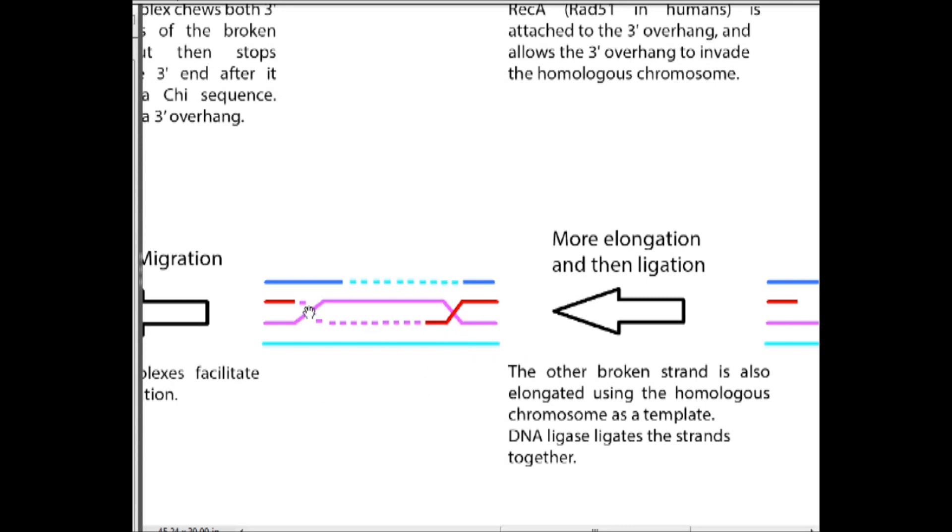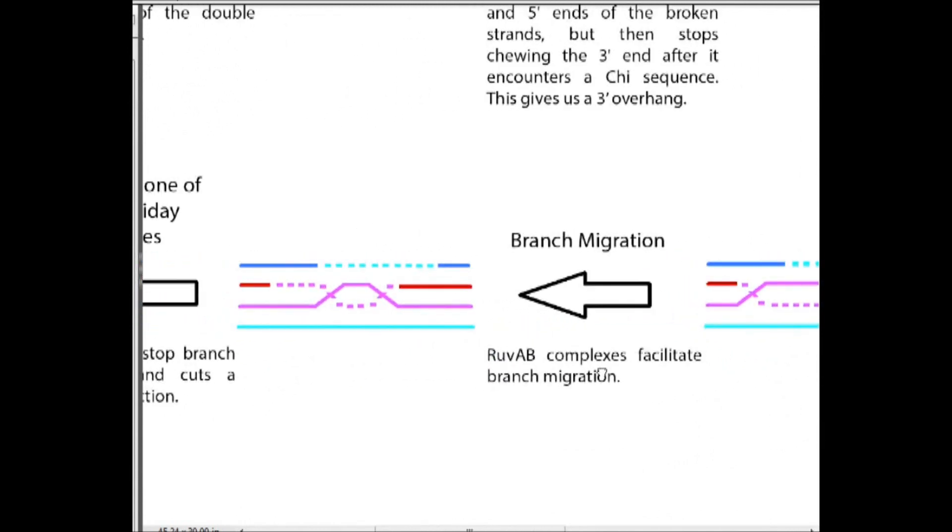After this we can migrate these two junctions that are formed. Branch migration is facilitated by the RUVAB complex, a complex of RUVA and RUVB. Essentially they help this move along this axis here.